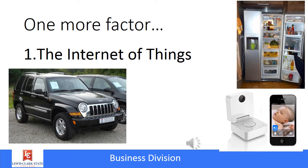Another huge factor that affects information security vulnerability is the internet of things. Almost everything in your home, whether it's your thermostat, your baby monitor, your refrigerator, your garage door — all of those can be connected to the internet, especially via a smartphone. And if it can be connected to the internet, it can also be hacked.